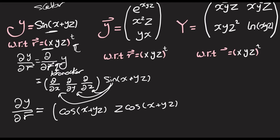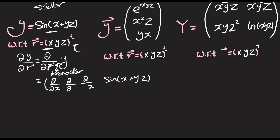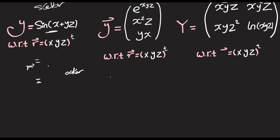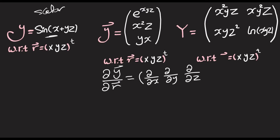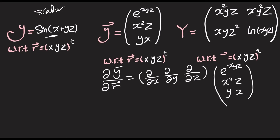Now let's try to differentiate a vector with respect to another vector. In this case, y is a vector with components e^(xyz), x²z, and yx. And what we'd like to find is partial of the vector y with respect to the vector r. So r is going to be the same: partial over partial x, partial over partial y, and partial over partial z. Here we've got y as it is: e^(xyz), x²z, and yx. What is going on here is a Kronecker product — basically, this will go in here, here, and here, giving us a 3×3 matrix.